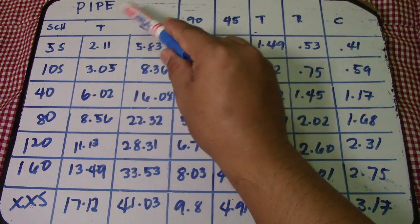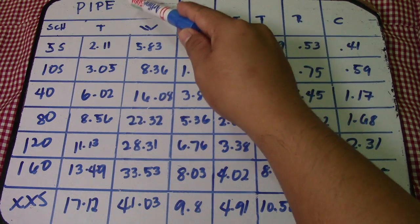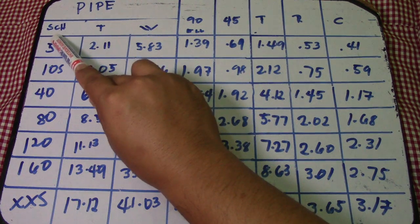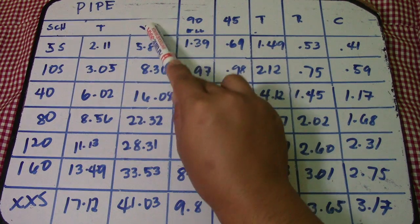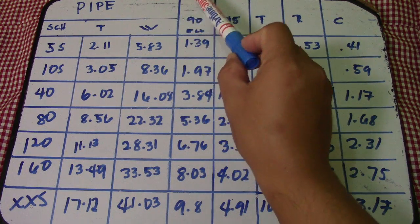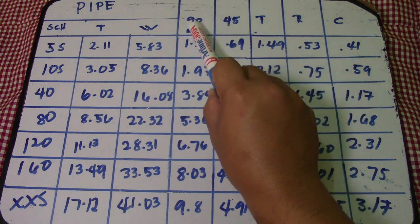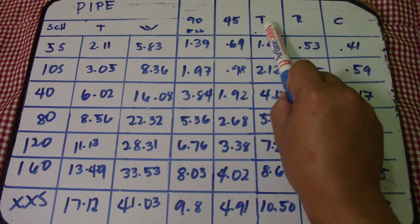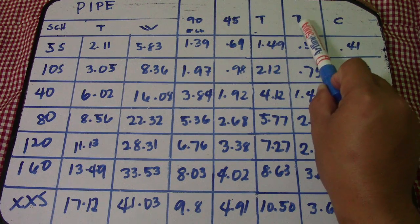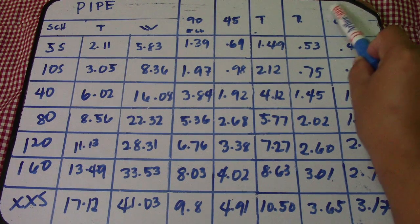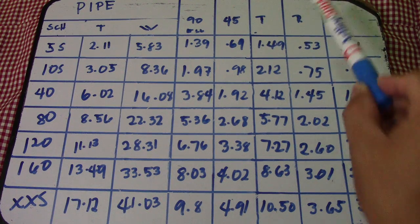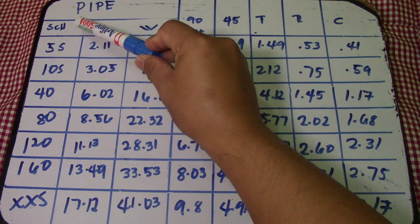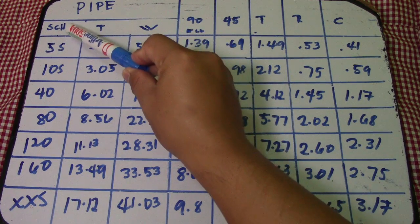This table has five columns: schedule, thickness, weight, and we have 90 degree elbow, 45, full T, reducer, and also cap. This first column is schedule.